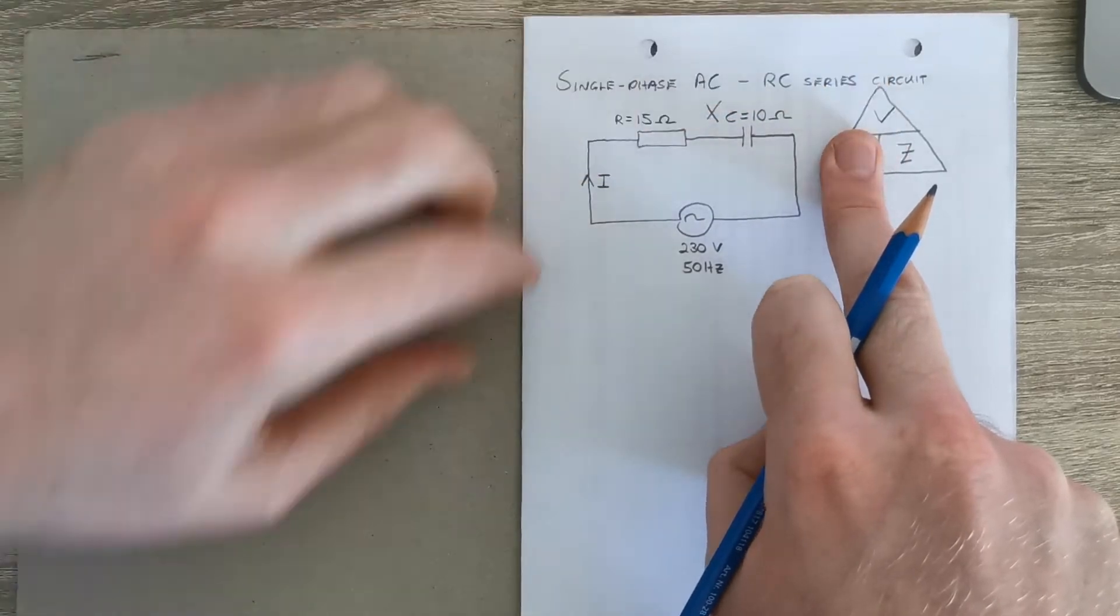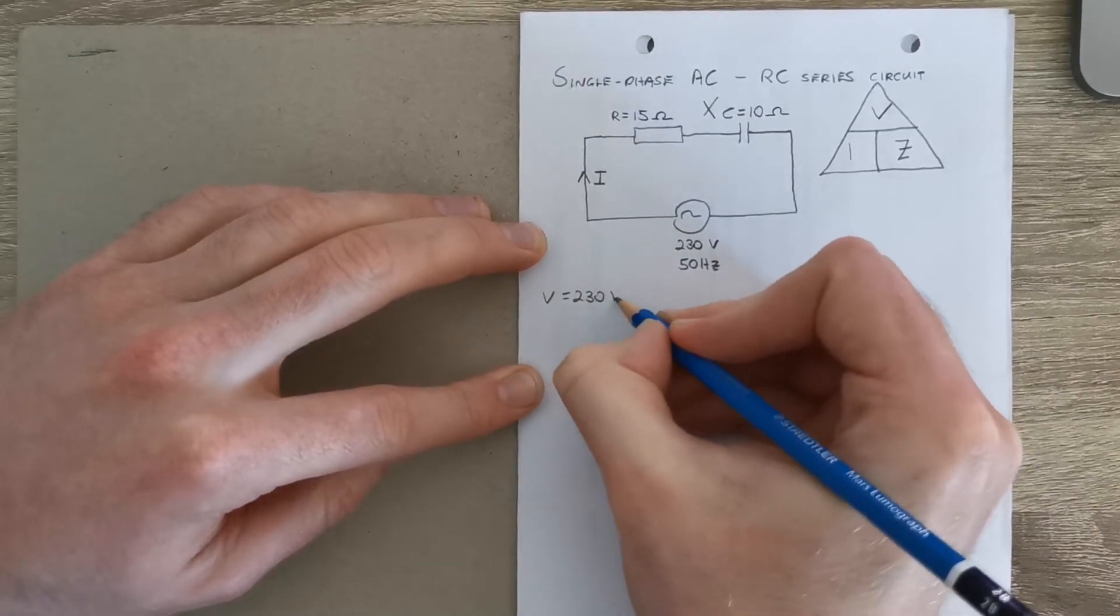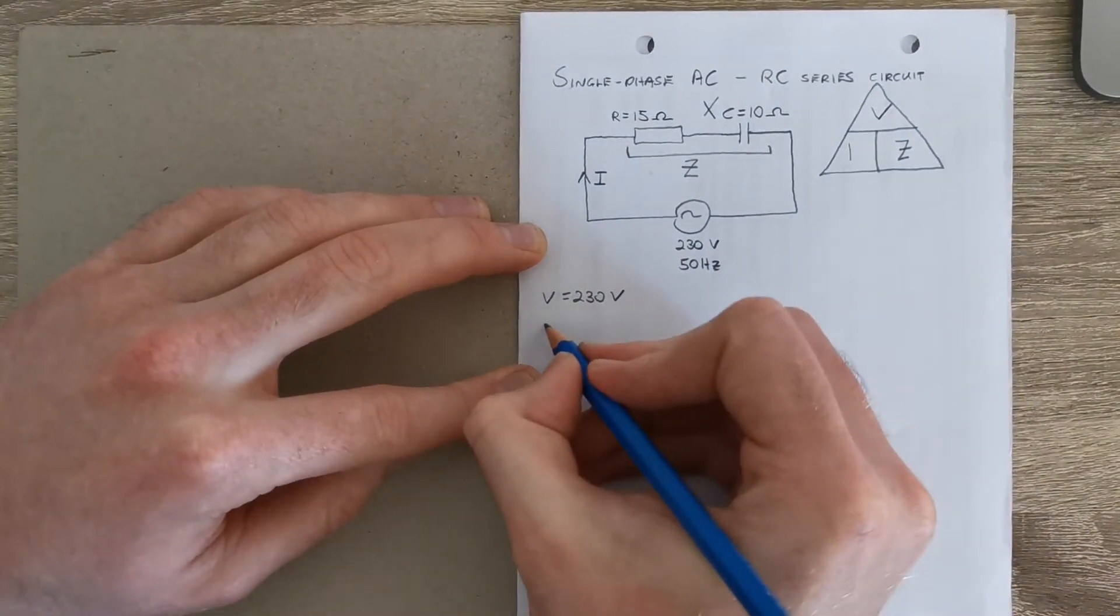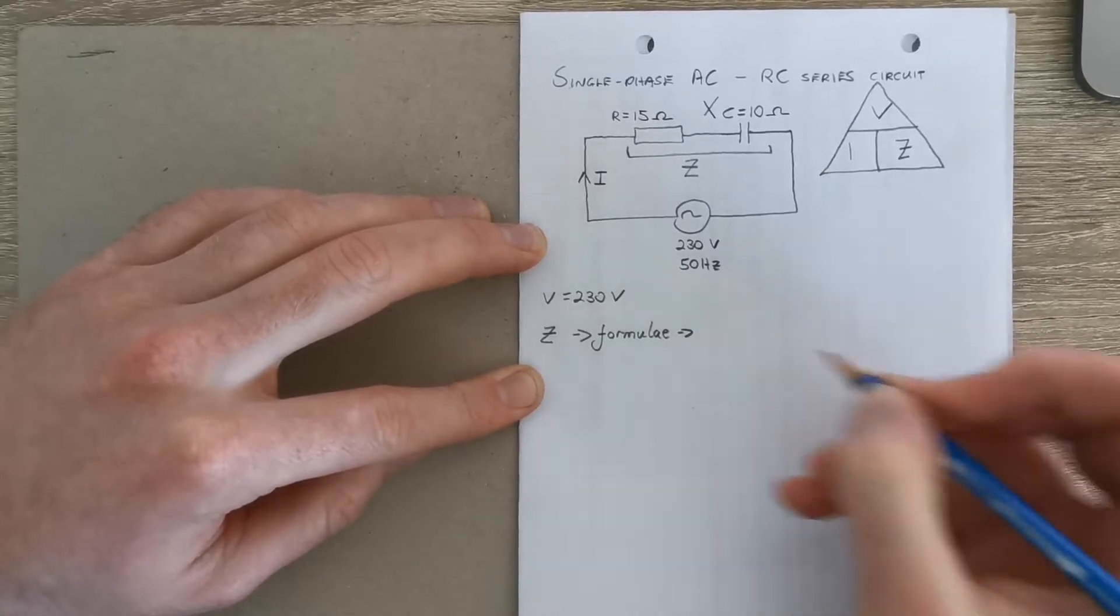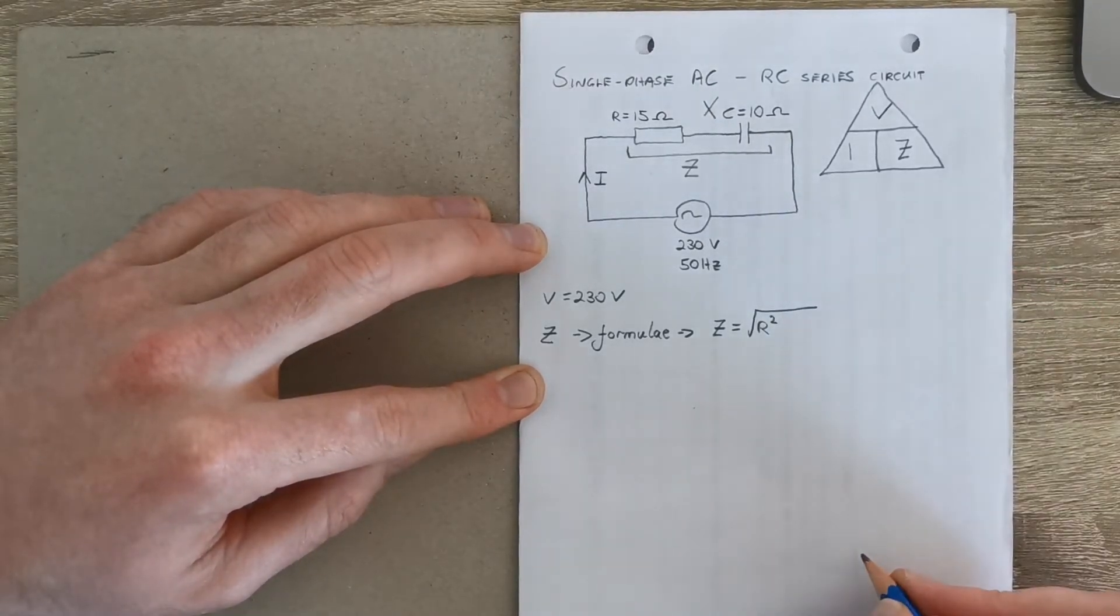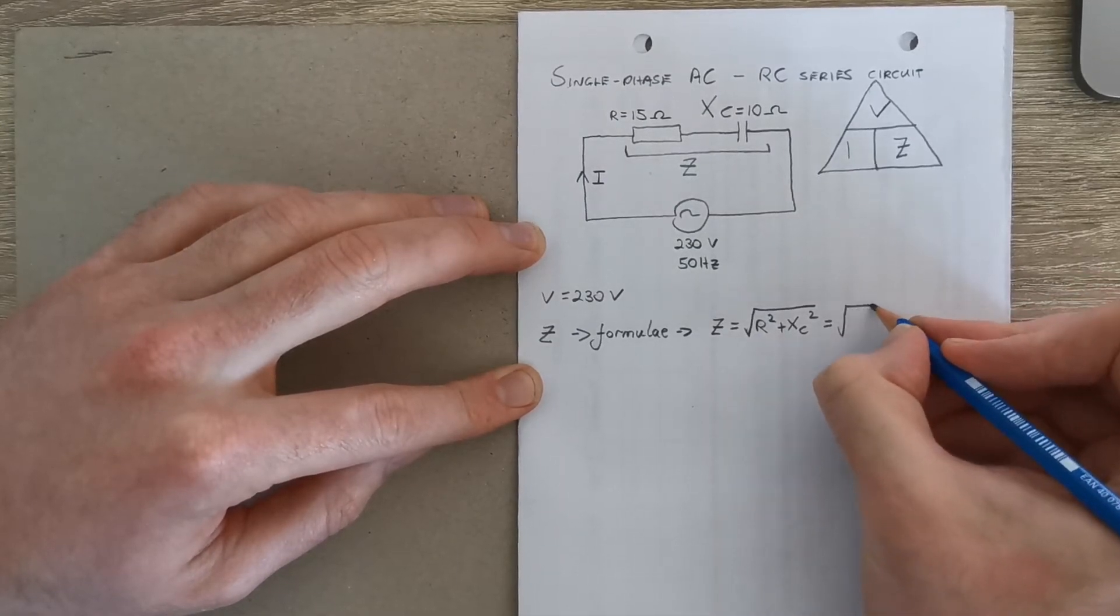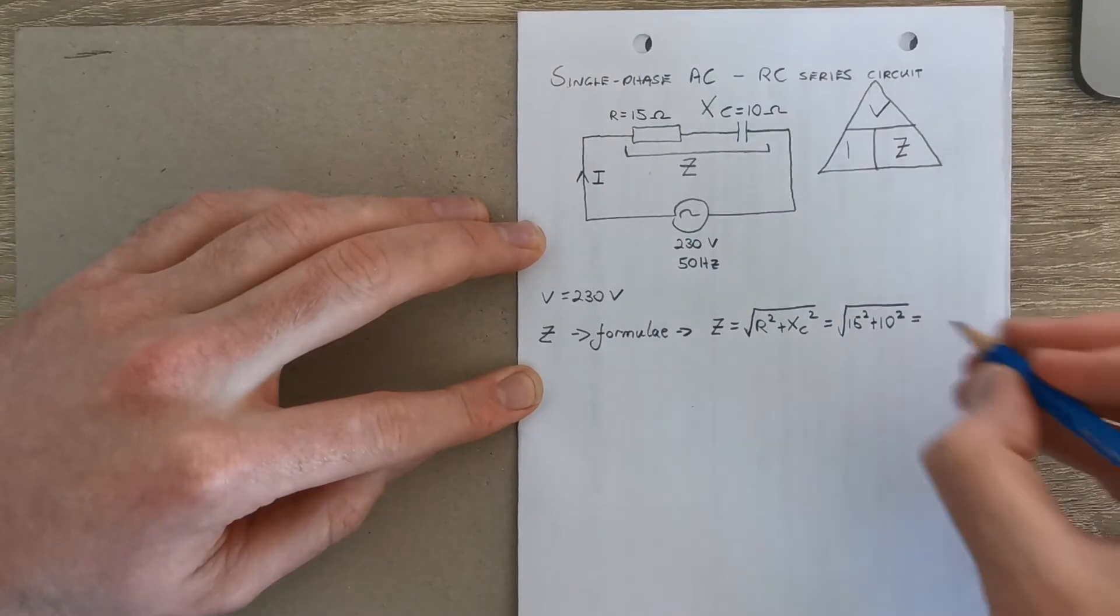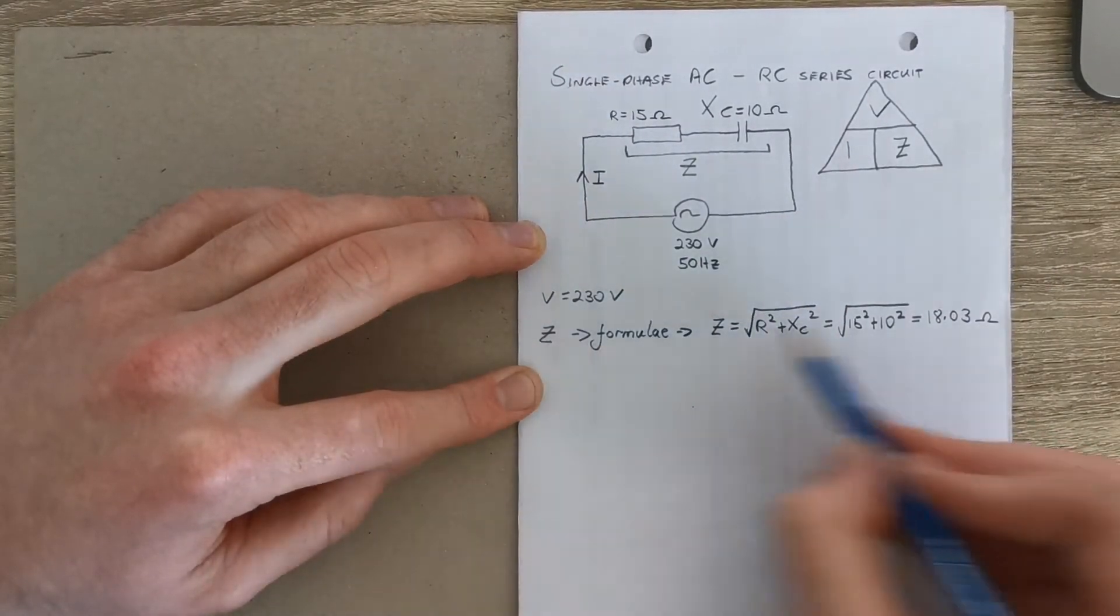So for example, if we want to get the current, we need to work out the voltage and impedance. Now we have the voltage already, it's this value here, so it's just 230 volts, but we need to get the impedance of this branch here, Z. Now Z, from your formula, Z is going to be R squared plus Xc squared, and we get the square root of that. So we have those two values, we can pop them in, and it'll be 15 squared plus 10 squared, and that works out then with your calculator at 18.03 ohms.